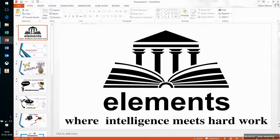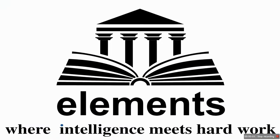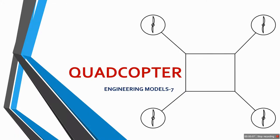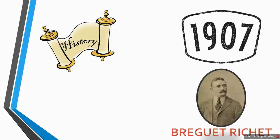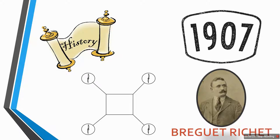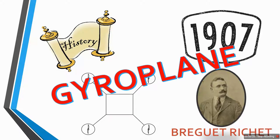Hello guys, this is my next video in the sequence of engineering models, and today I will be talking about quadcopters. If I have to talk about the history of the quadcopter, I will say that the first quadcopter was designed in 1907 by Brigitte Richard. At that time, that popular model was called the gyroplane.